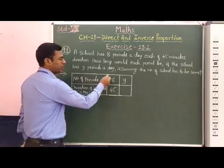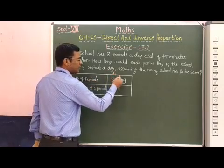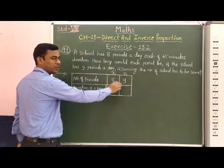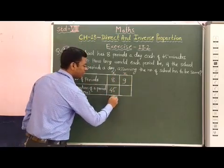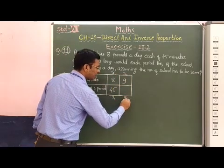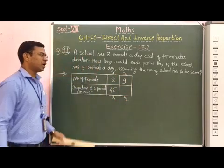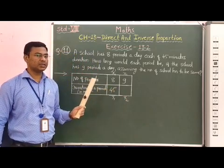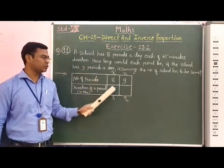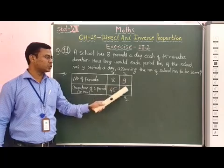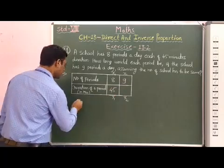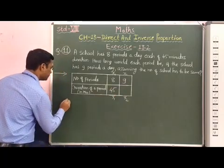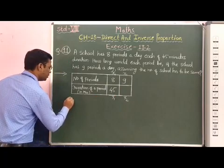Students, if you consider this value x1, this value x2 for the first quantity, and for the second quantity first value y1 and second value y2. In inverse proportion, the product is constant. Therefore, x1 × y1 = x2 × y2.